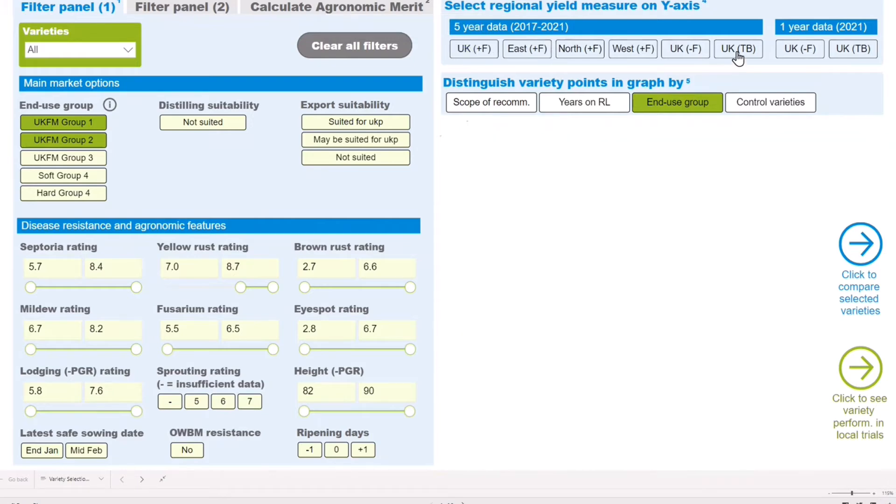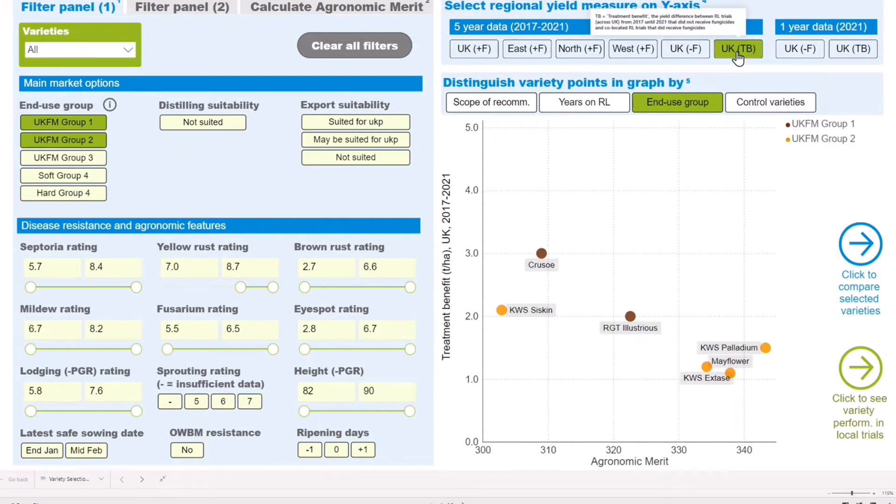TB stands for treatment benefit. This calculates the yield benefit recorded in treated trials compared to untreated trials. The larger the treatment benefit, the greater the benefit received from applying fungicides.